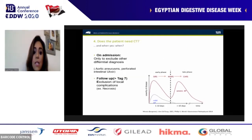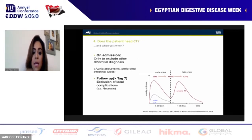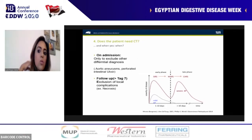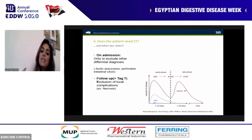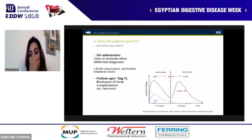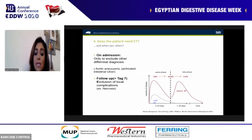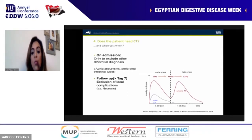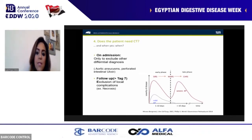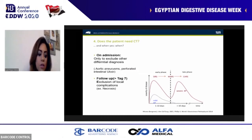Regarding CT imaging: we don't need CT when the patient has a definite diagnosis based on amylase, lipase, and abdominal pain. CT is needed in the second stage when local complications such as abscess or necrosis develop, and to evaluate the condition to guide management.